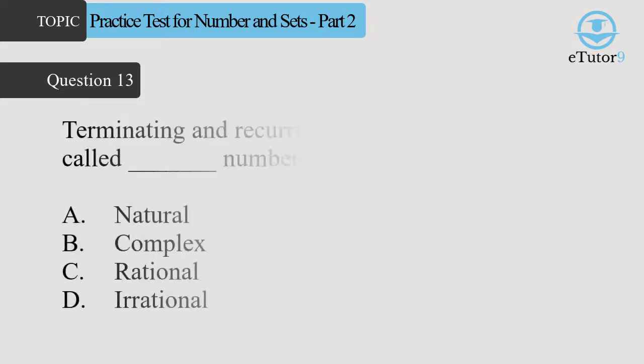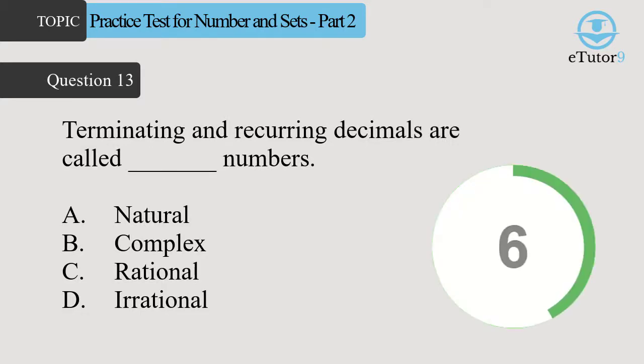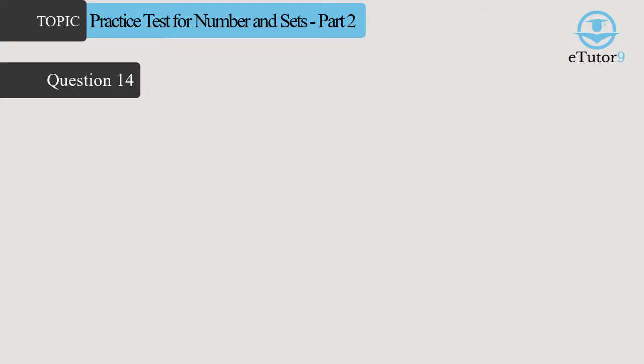Question 13. Terminating and recurring decimals are called blank numbers. Answer is D. Rational numbers. Question 14.